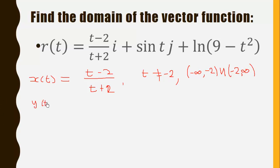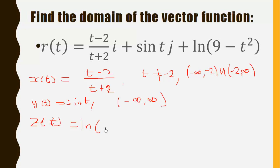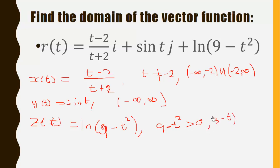For y(t) equals sine t, this is continuous everywhere, so its domain is negative infinity to positive infinity. For z(t) equals ln(9 minus t squared), the function is continuous where 9 minus t squared is greater than 0.